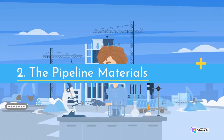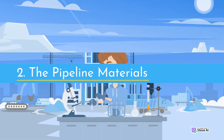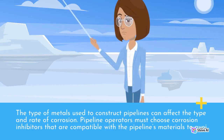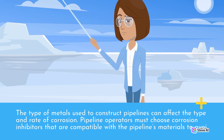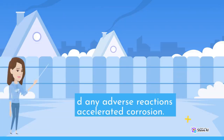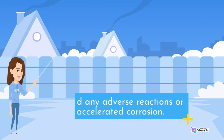2. The pipeline materials. The type of metals used to construct pipelines can affect the type and rate of corrosion. Pipeline operators must choose corrosion inhibitors that are compatible with the pipeline's materials to avoid any adverse reactions or accelerated corrosion.